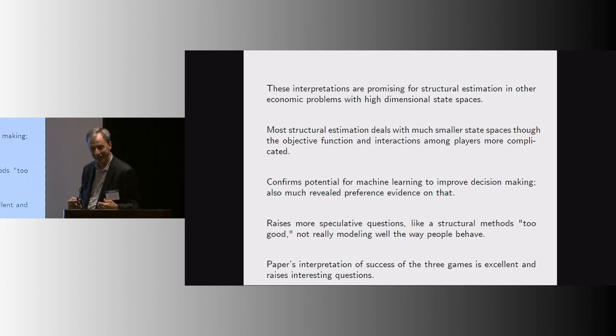These interpretations that Mitsuri talked about are quite interesting, and I think raise a bunch of interesting questions. These are questions maybe I want to ask myself, some of them, because they're econometrics things, but I think they're interesting. You know, it provides hope for doing structural estimation. The type of models we estimate generally don't have this kind of dimensionality. Even if we have a lot of state variables, we're not dealing with those big problems, I don't think. And it raises more speculative questions, like maybe the structural methods are too good. I mean, you can beat people using this. So maybe people aren't behaving according to this model, that means. So maybe these are too good. And then, just in summary, the paper's interpretation of success of the three games is excellent and raises lots of interesting questions. All right.